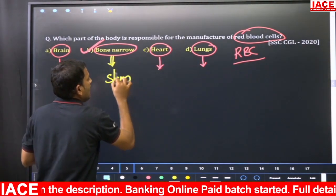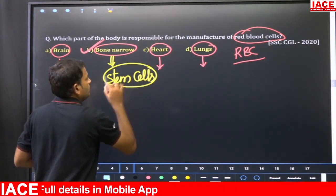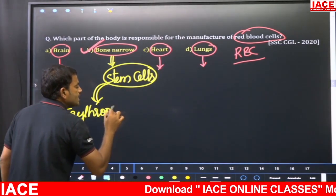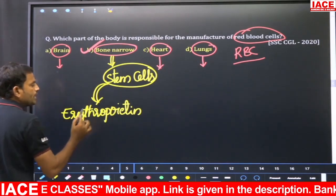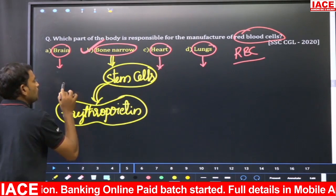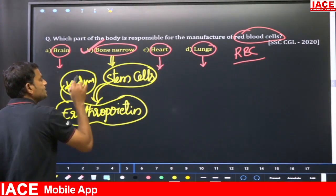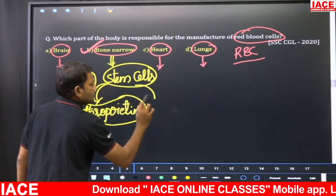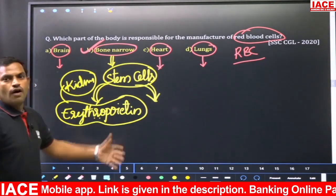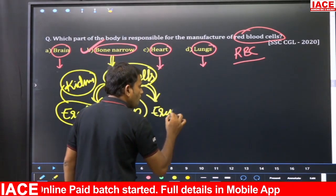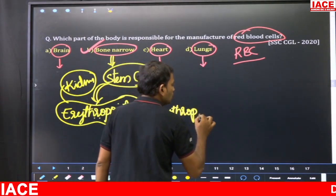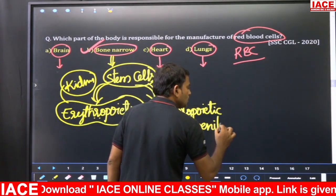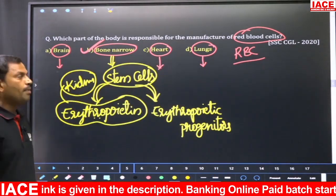Bone marrow contains special stem cells. With the help of these stem cells and an important hormone called erythropoietin — produced by the kidneys — red blood cells are manufactured. The stem cells involved in RBC production are called erythropoietic progenitors. The process of RBC production is called erythropoiesis, WBC production is called leukopoiesis, and overall blood production is called hemopoiesis.